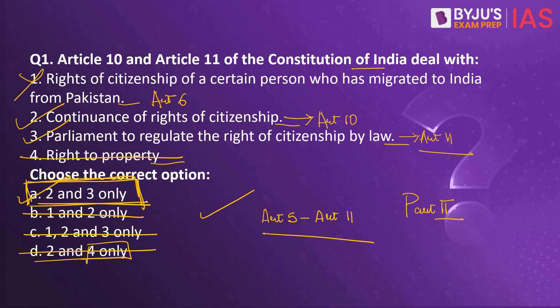Here's a task for you today: let me know — citizenship comes under which list under the Constitution? Union list, state list, or concurrent list? Let me know in the comment section. Also, don't forget to comment how many questions you could get right.